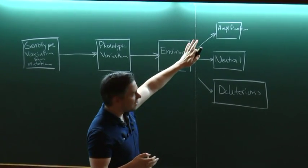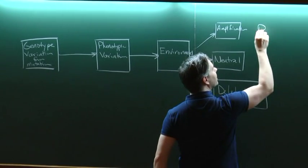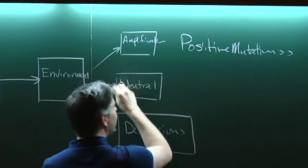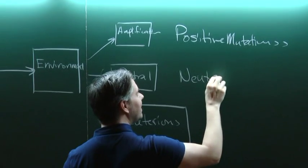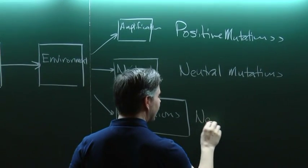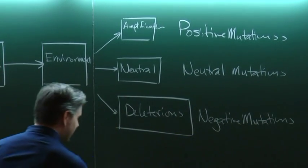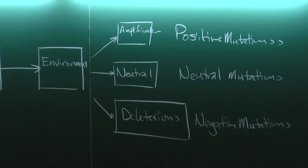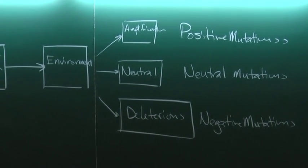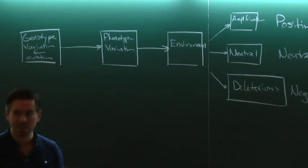The kinds of mutations that lead to benefits in the environment and therefore amplification — these are called positive mutations. These are, reasonably enough, called neutral mutations, and these are negative mutations. How evolution happens and the rates at which evolution happens depend quite a bit upon what the rates of these kinds of mutations are, and therefore how that then sets how the population is going to evolve over time.